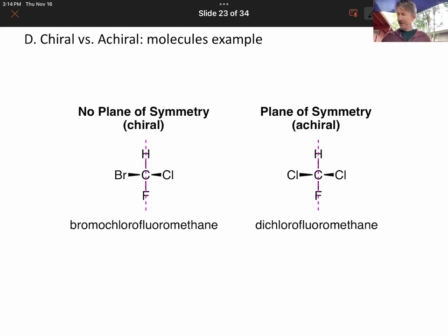So the bromochlorofluoromethane has no plane of symmetry. And this definitely, if you make a plane right here through the hydrogen, carbon, and fluorine, the chlorine on each side is symmetrical. There is a plane of symmetry. And you can see it right here with this line. And that means it's achiral.